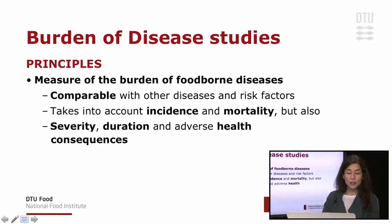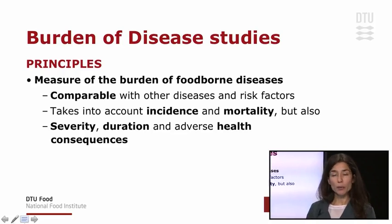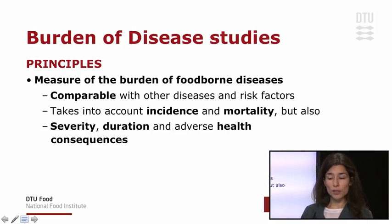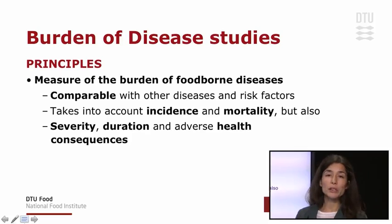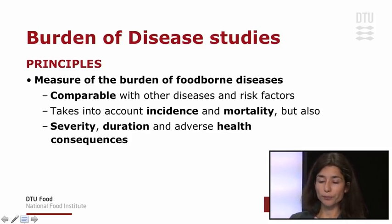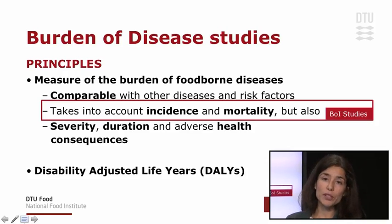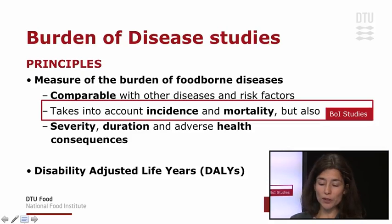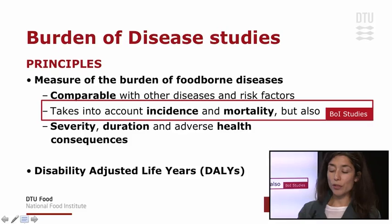This is where we use burden of disease studies, where the principle is to compare the burden of different foodborne diseases in a comparable way, so we can actually use this measure to compare between different diseases and risk factors. Burden of disease studies take into account incidence and mortality, but also the severity of the disease, the duration of its symptoms, and the complete list of potential adverse health effects. Because they take into account incidence and mortality, they build on burden of illness studies, using the true number of cases rather than only the reported number. The most commonly used measure is disability-adjusted life years, or DALYs.